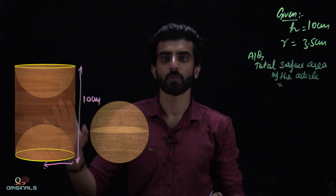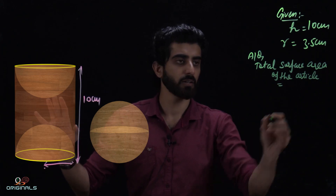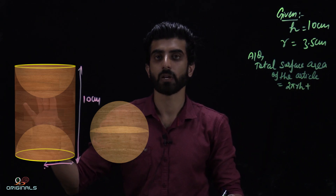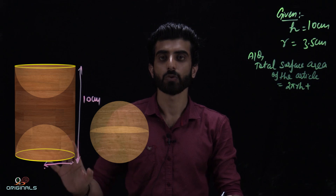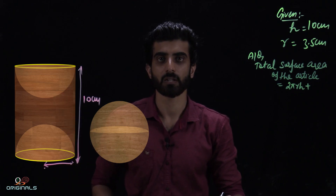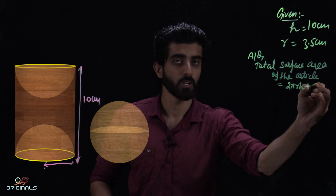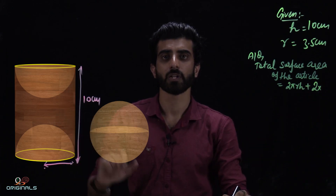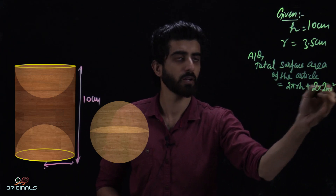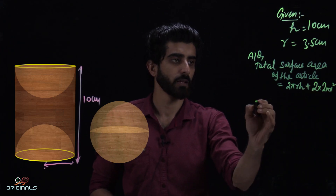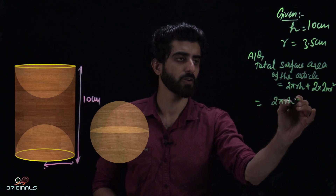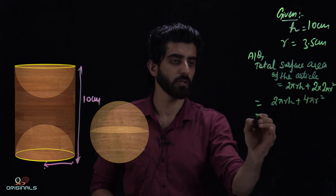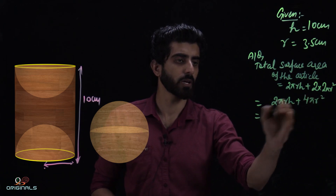Total surface area = curved surface area of cylinder (2πrh) + curved surface area of both hemispheres. Since hemispheres are scooped from both sides, we take 2 hemispheres. The curved surface area of one hemisphere is 2πr², so for two hemispheres it becomes 2 × 2πr² = 4πr².